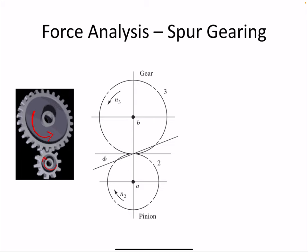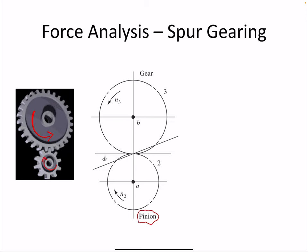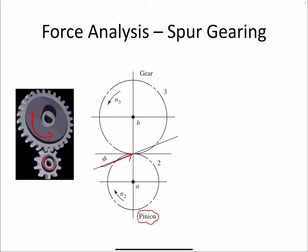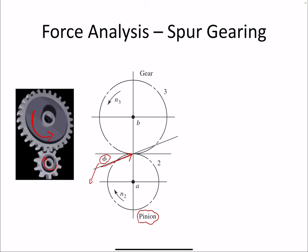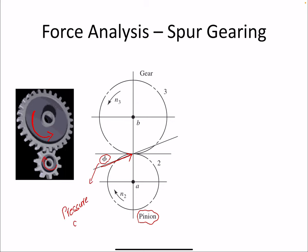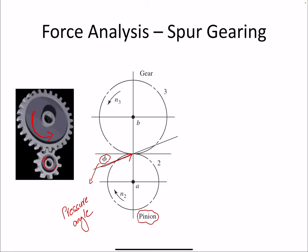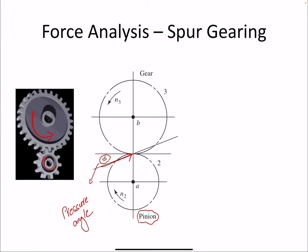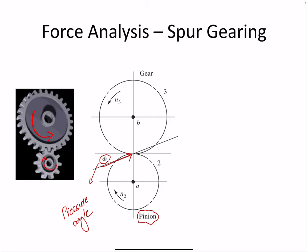The pinion, which is the smaller gear and also the driver here, is pushing the other gear along the pressure angle. The pressure angle is a property of your gear and it tells us how forces are acting on the other gear. This force is going to have two components: the tangential component and the radial component.